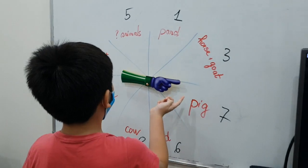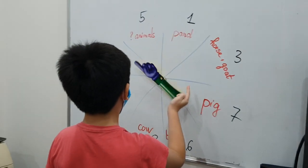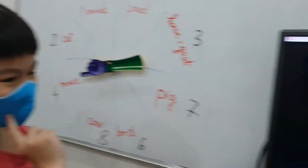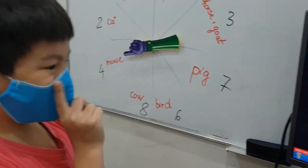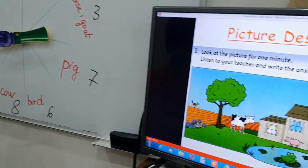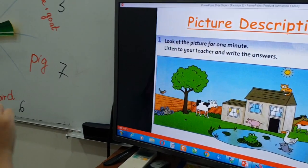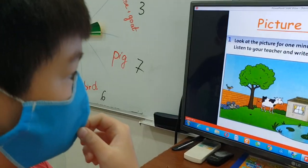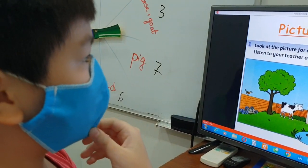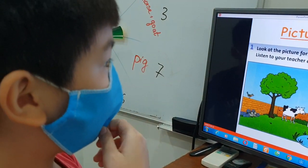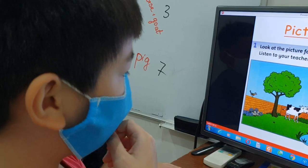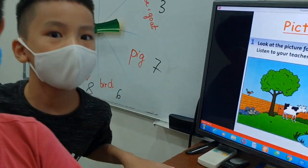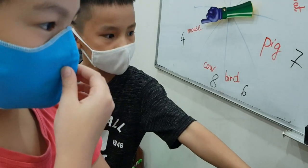Okay, Phong, your turn. One, two, three. Mouse. So, where is the mouse in the picture? You see? Where's the mouse? The mouse is in the flower. Oh, in the flower. Really? Okay.